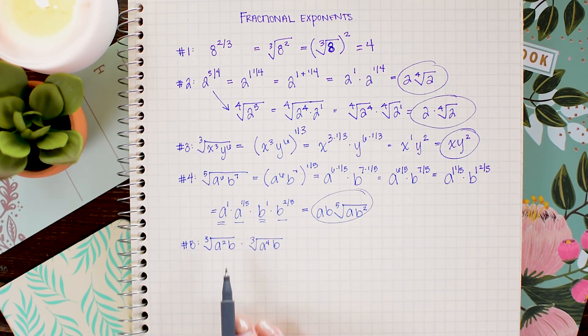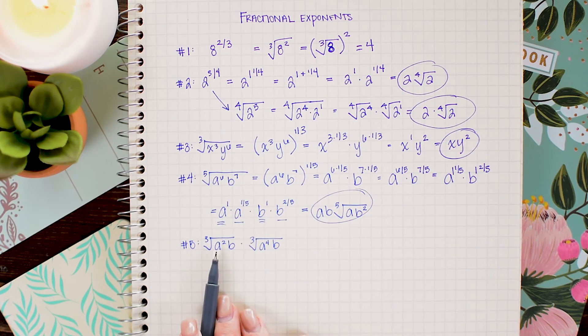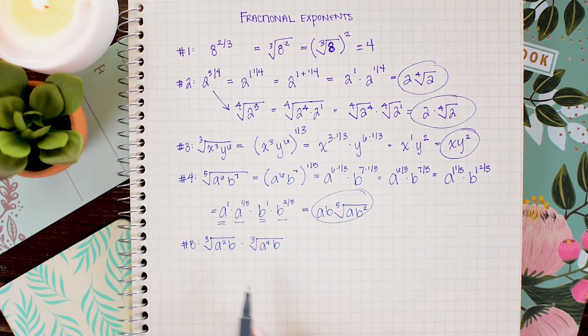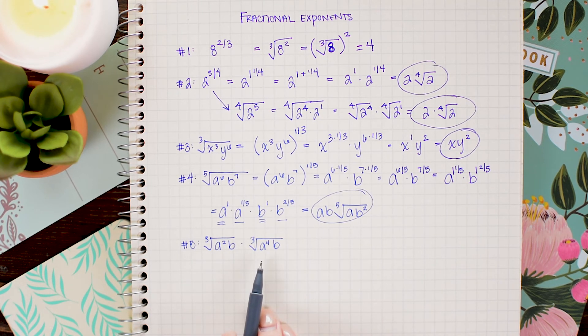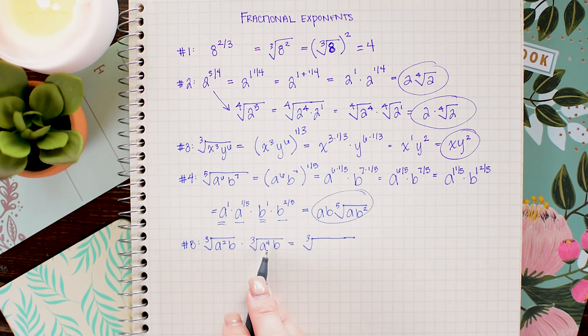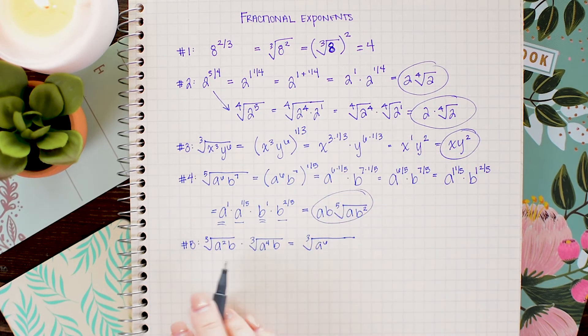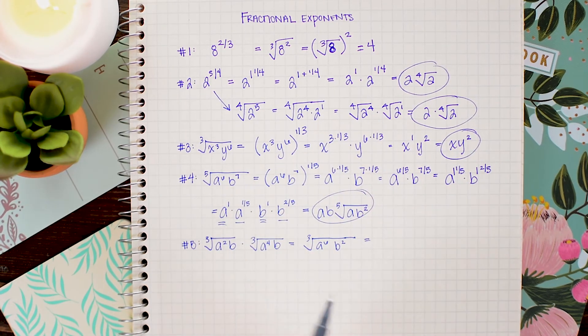In this final problem we're going to multiply these two cube roots together. Now I have the option of either multiplying them together first and combining them into one cube root or trading out the cube roots for powers of 1 third before multiplying. I personally think it's easier to combine them into one cube root before I introduce that fractional exponent so that's where I'm going to start. And now a squared times a to the fourth gives me a to the sixth. And b times b is simply b squared.